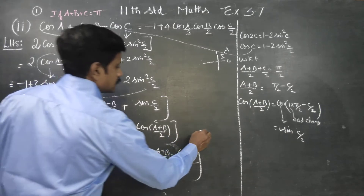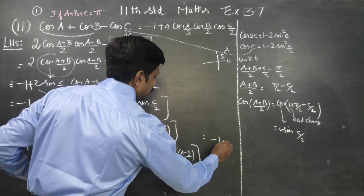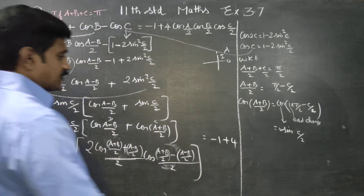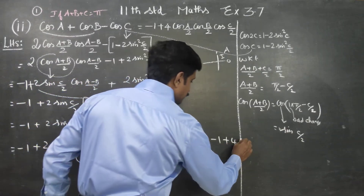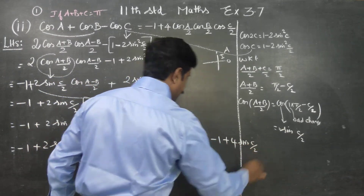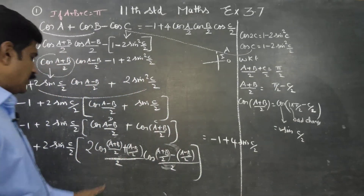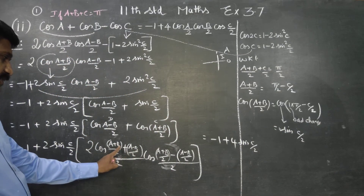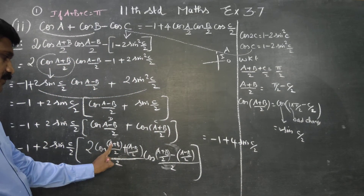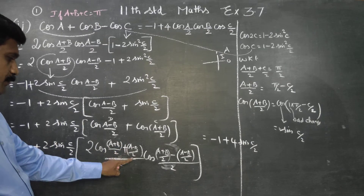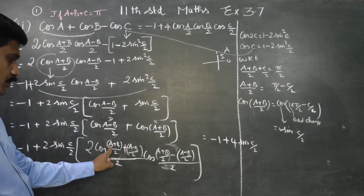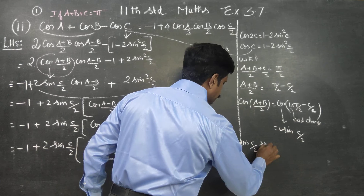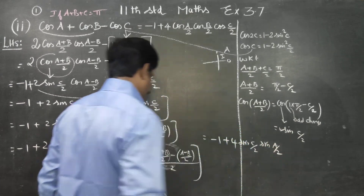The answer is minus 1 plus 4 · sin(C/2). We have sin(C/2) here. Then 2 minus b minus b cancel, giving 2a; 2a by 2 is a by 2. And the answer is a by 2.